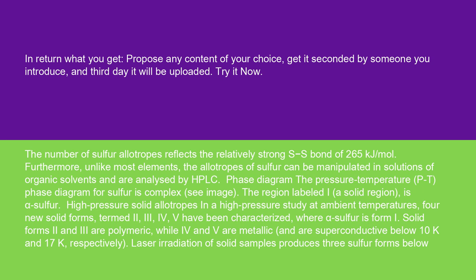Phase diagram: the pressure-temperature (PT) phase diagram for sulfur is complex (see image). The region labeled I, a solid region, is alpha-sulfur. In a high-pressure study at ambient temperatures, new solid forms termed 2, 3, 4, and V have been characterized, where alpha-sulfur is form I.